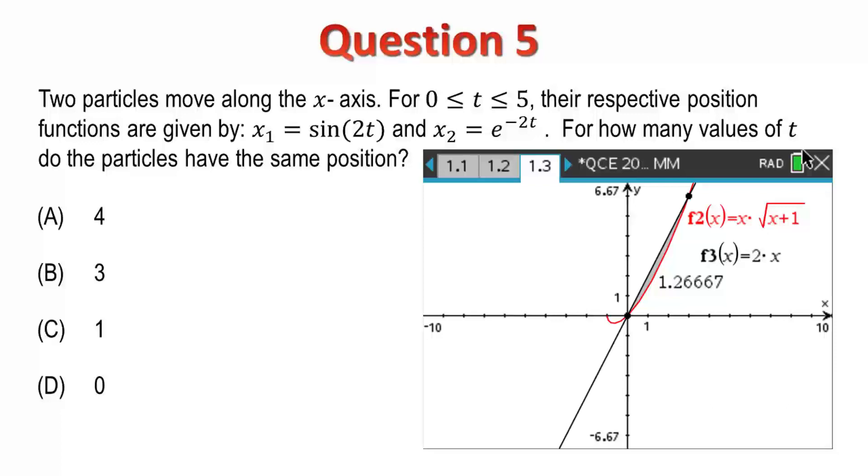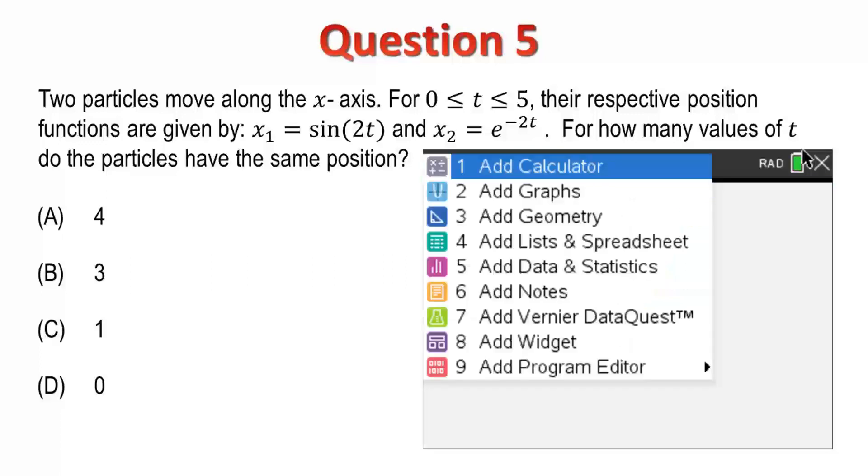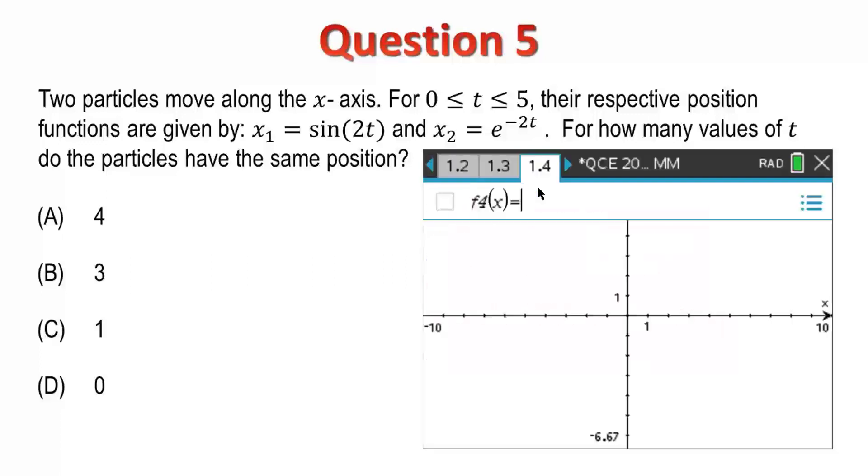Question 5. Two particles move along the x-axis. During the period of time from 0 to 5, their respective functions are given by x1 as sin 2t and x2 as e to the negative 2t. And, we need to find out how many values of t do the particles have the same position. Now, we don't need to find the values of t, just how many times. So, for that, I'm going to use a graph.